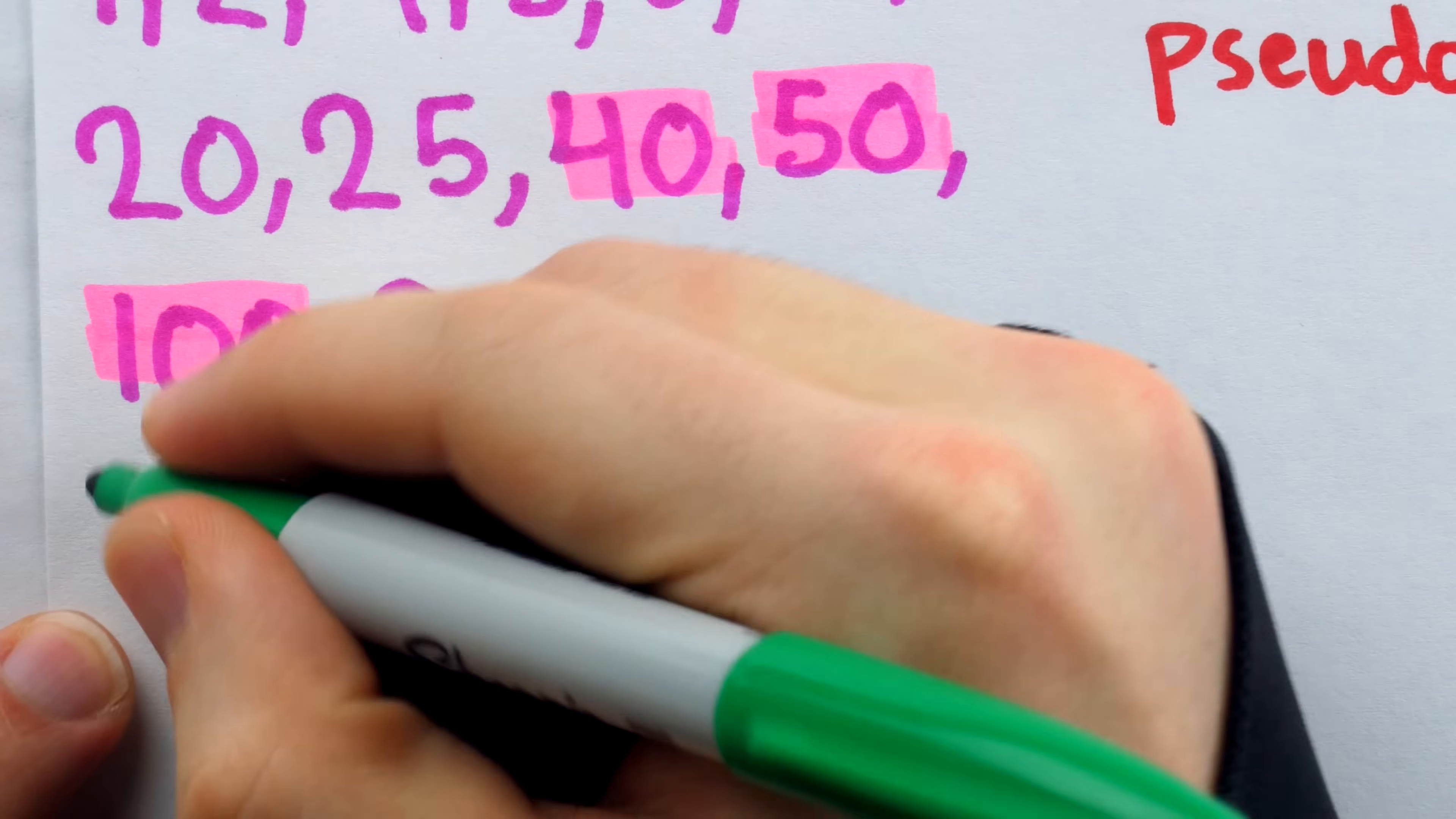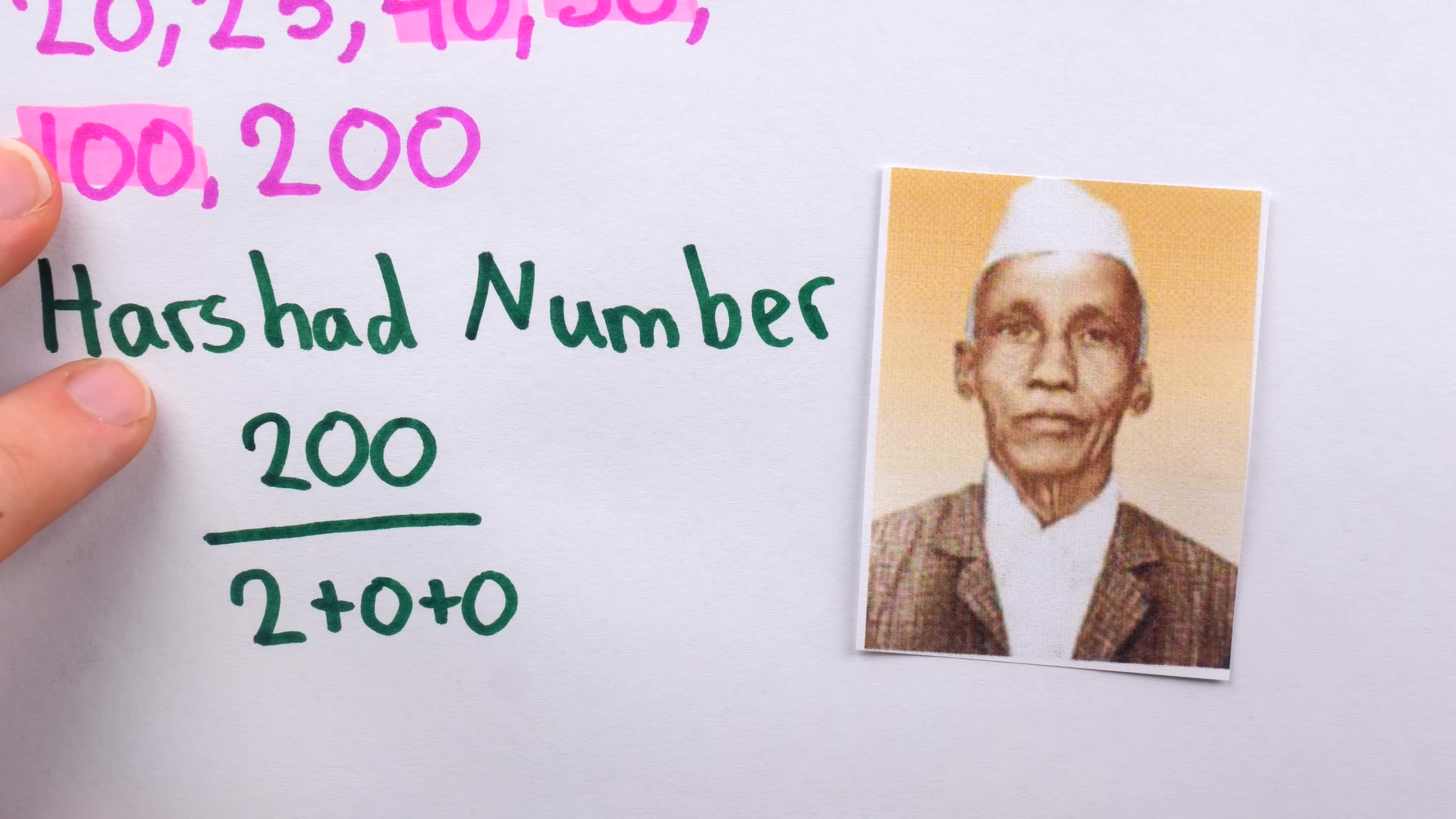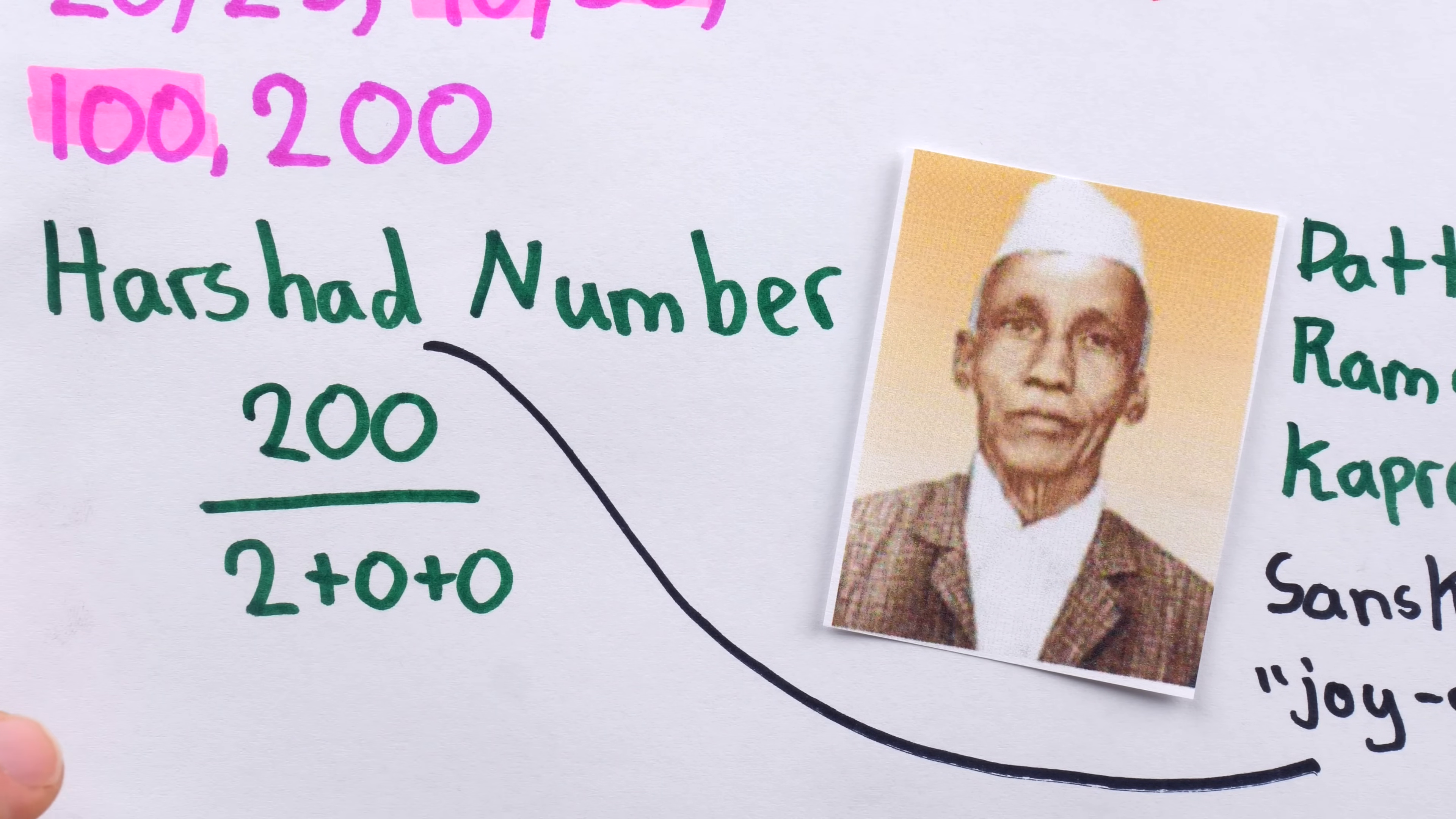200 is also an example of what we call a harshad number. This is simply because the number 200 is divisible by the sum of its digits. 200 is divisible by 2, and so it's a harshad number. These numbers were introduced and named by Indian mathematician Dattatreya Ramchandra Kaprekar. He, of course, didn't name the numbers after himself. Instead, he named them after a Sanskrit word for joy-giver.